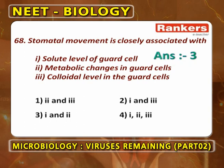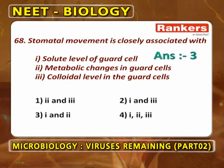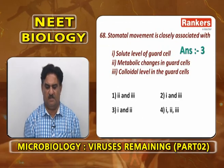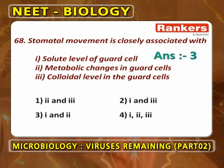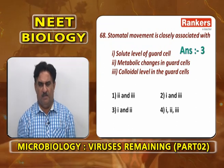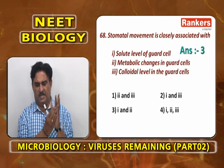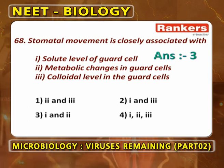Stomatal movement is closely associated with solute levels of guard cells and metabolic changes in guard cells. Solute levels: when solute is more, concentration is more, water potential is less, and water enters or exits guard cells accordingly. Metabolic changes in guard cells include protons moving out actively, K⁺ and Cl⁻ moving in passively, malic acid converting into malate and H⁺. Colloidal levels in guard cells is wrong. Answer is 1 and 2.